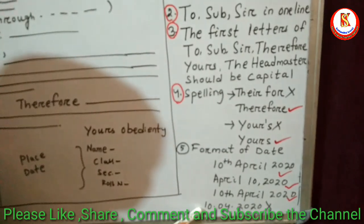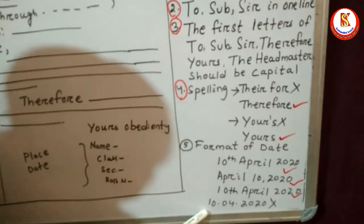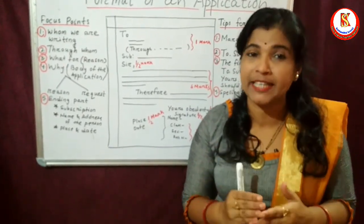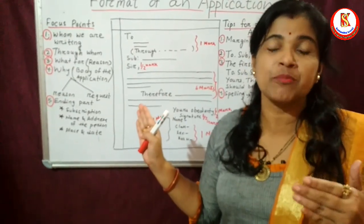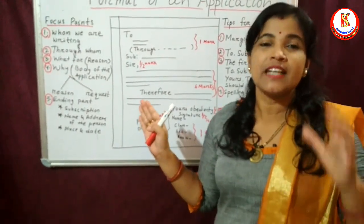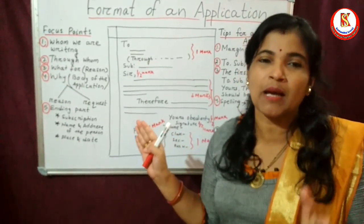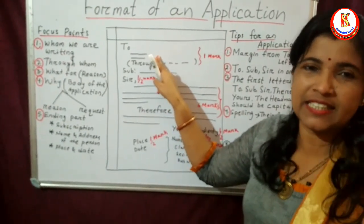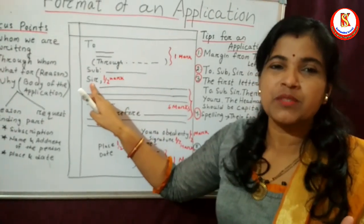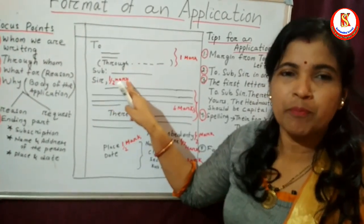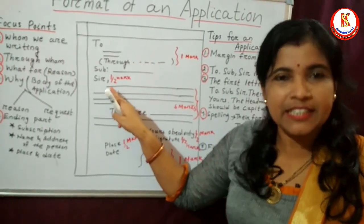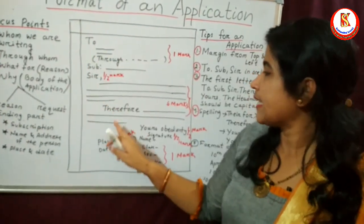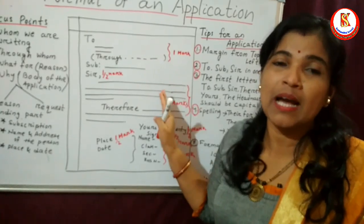BSE Odisha has set a rule on mark distribution for an application. If you write the address correctly — to whom we are writing — you will get one mark. For 'Sir,' you will get half a mark. The comma after 'Sir' is optional — you can give it or not. Note that a comma is not used after 'To.' Then comes the content or body of the application.